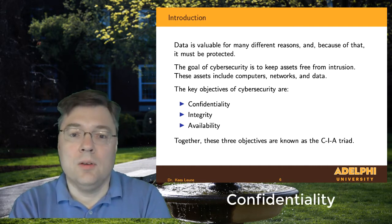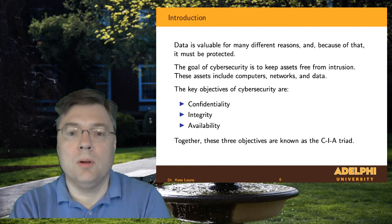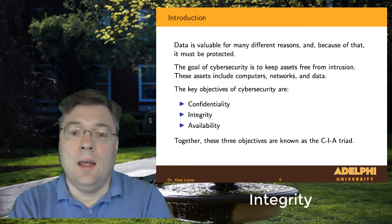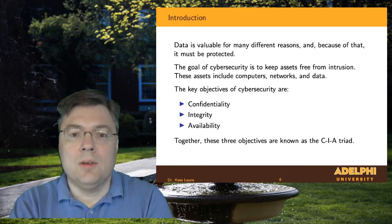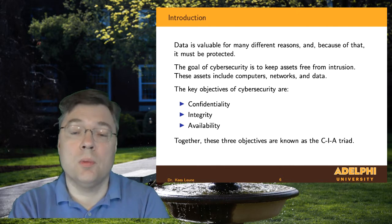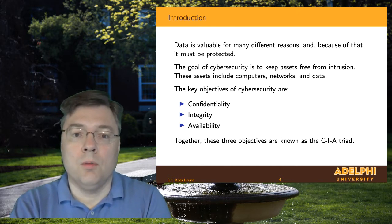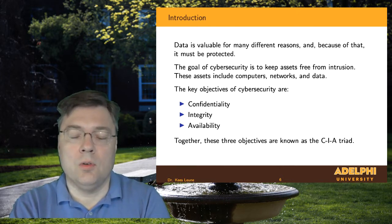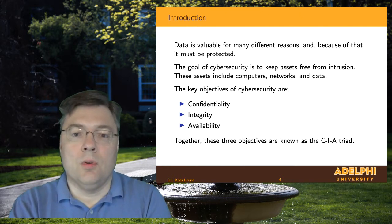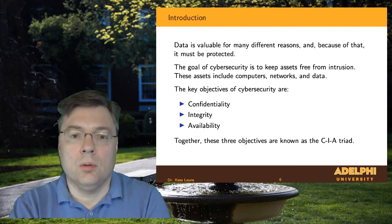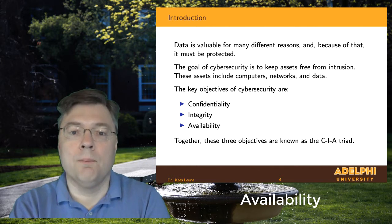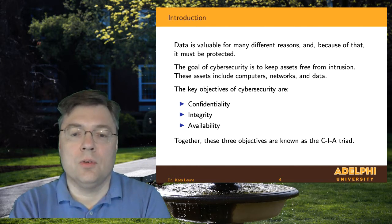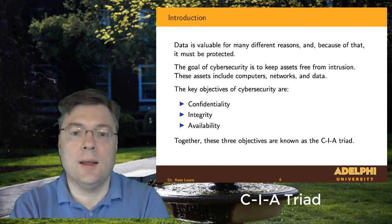Confidentiality just means what it sounds like: make sure that information that shouldn't be publicly known is indeed not publicly known. Integrity has a couple of meanings — in principle, it means that you don't want any unauthorized changes. It's okay to change things if they were supposed to be changed, but part of the goal of cybersecurity is to make sure that data and computer systems don't undergo changes that shouldn't be made. And then lastly, there's availability: we have to make sure that our computer systems are indeed available to us when we need them.